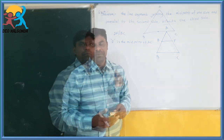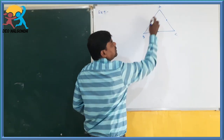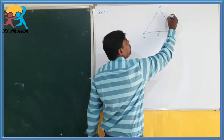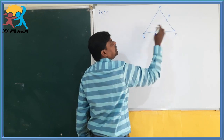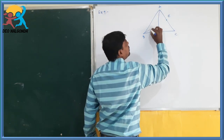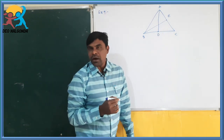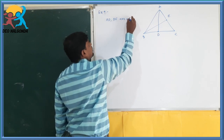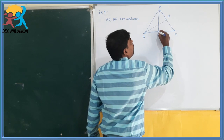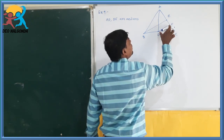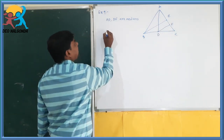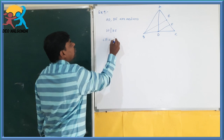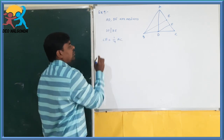We will observe Example 9. In triangle ABC, D is the midpoint of BC and E is the midpoint of AC. AD is the median and BE is the median — so AD and BE are medians. We have drawn DF parallel to BE. We have to prove that CF is equal to one-fourth of AC.